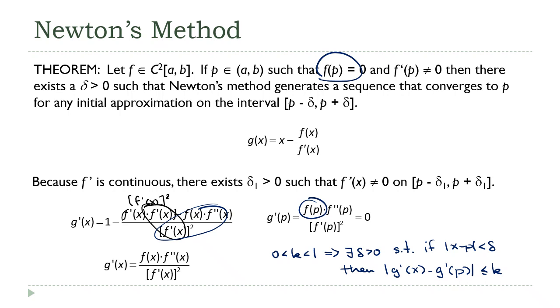Really, in continuity, it's less than, but if it's less than, it's also less than or equal to. Now, we showed up here that g'(p) is equal to zero. This term goes away, and what we've shown is that if x is on this delta interval, then the derivative is less than or equal to k. And that's the bound condition from the theorem.